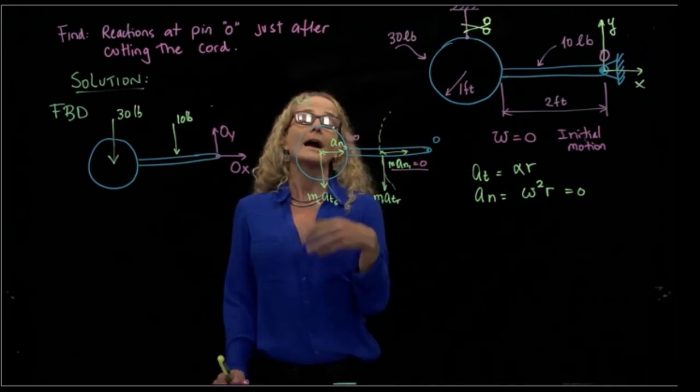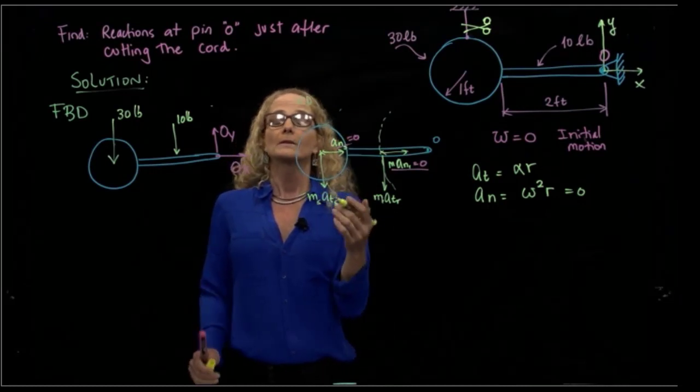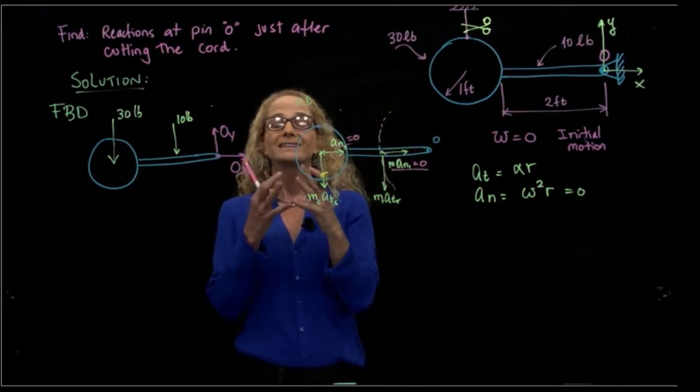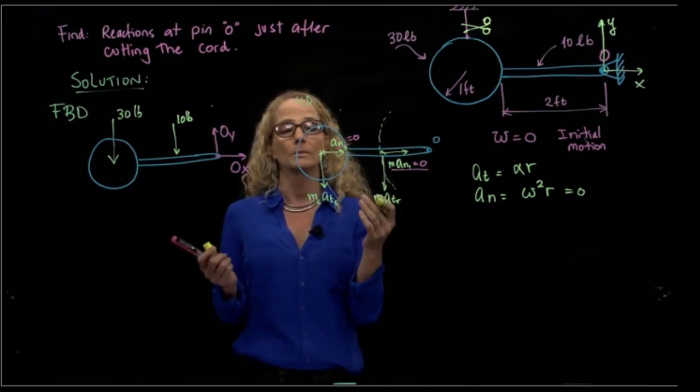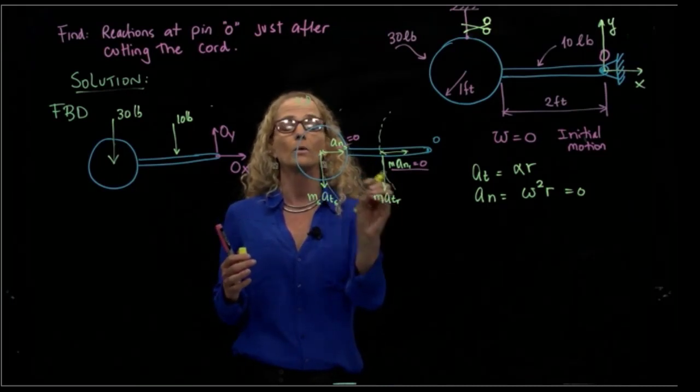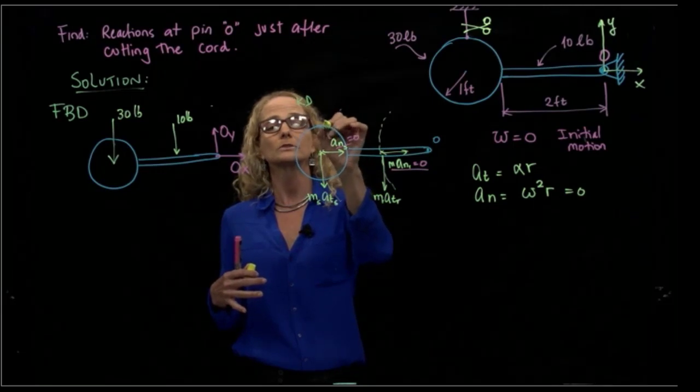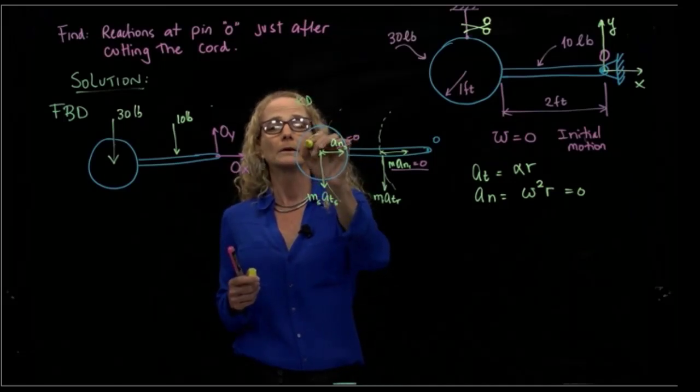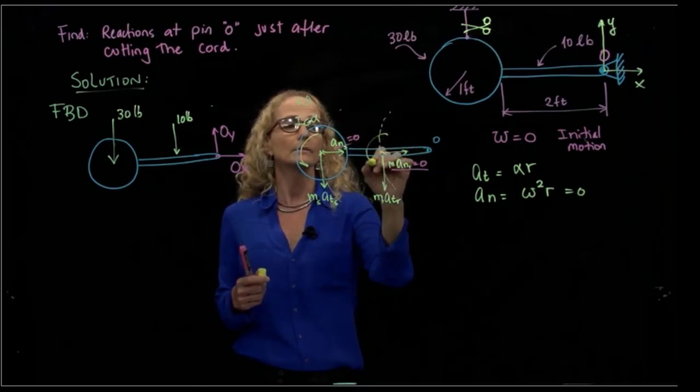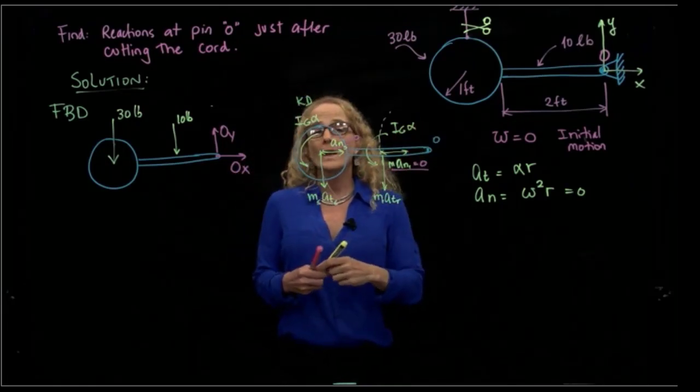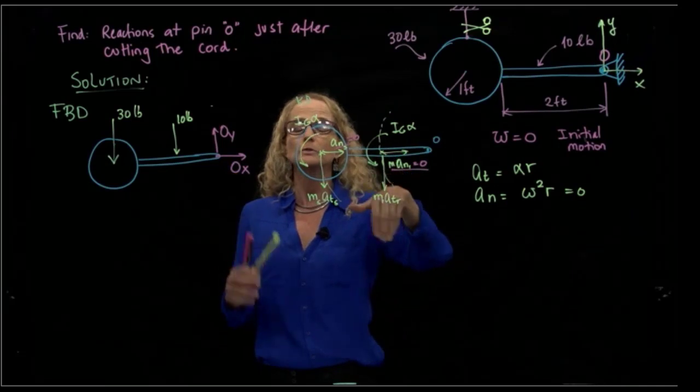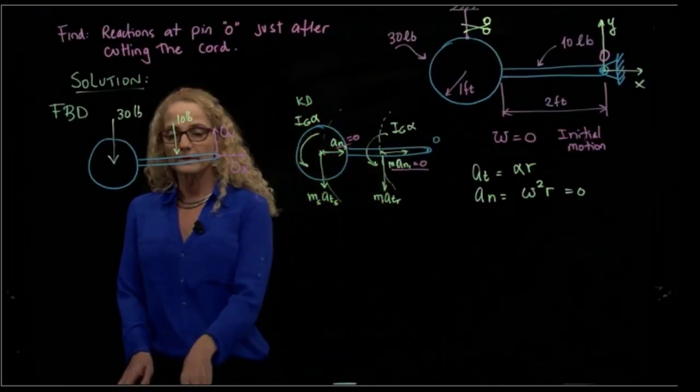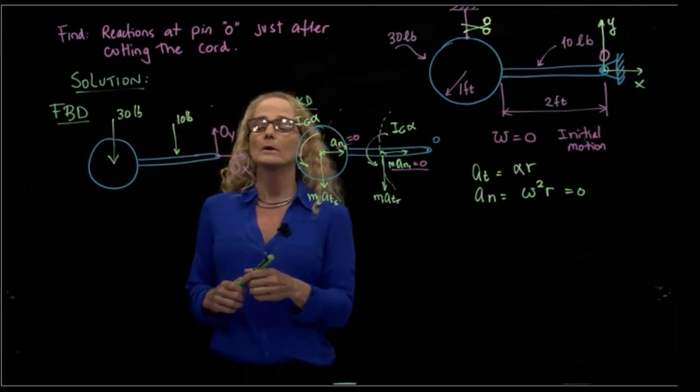We only have tangent acceleration. We also have mass moment of inertia because these are rigid bodies. When we have distribution of mass, we have to consider mass moment of inertia. When talking about particles, we only had accelerations, but now we have distribution of mass with respect to the center of mass, so we have inertia times alpha. Once we have our free body diagram and kinetic diagram, we use our equations of motion.